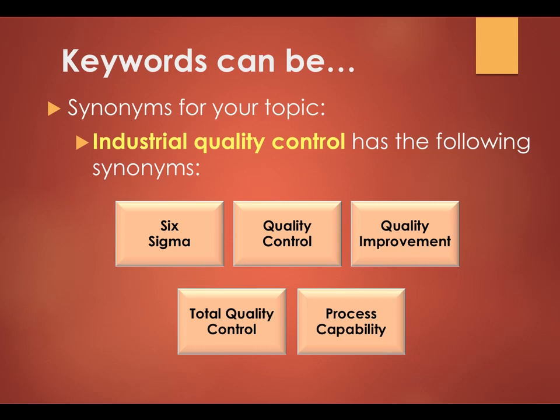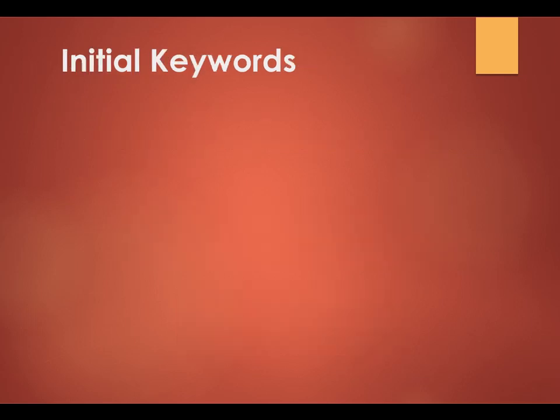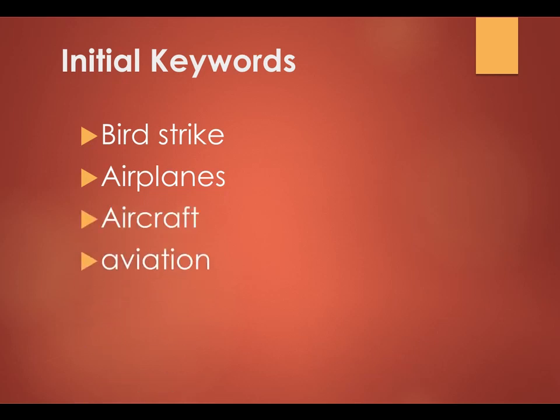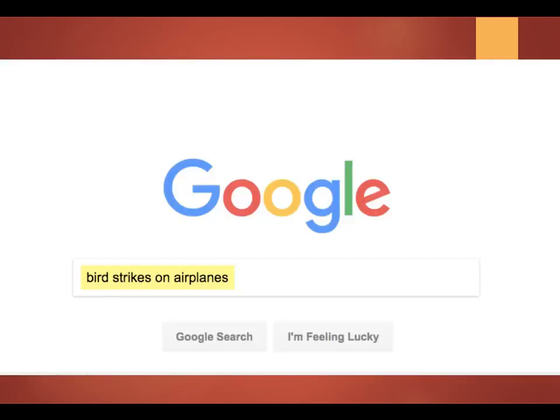Here is a quick method to help you identify useful keywords for your search topic. First, start a raw keyword list in Microsoft Word or in your notebook. Put down any words that you can think of off the top of your head that relate to your topic. For example, if I choose Bird Strikes on Aircraft, then I might come up with the following keywords off the top of my head.